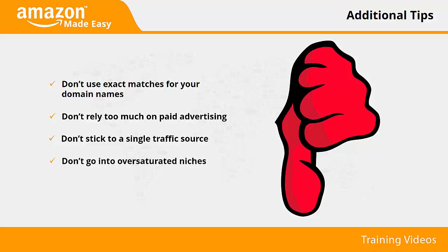Don't go into oversaturated niches. While one of the best strategies is selling and promoting best sellers and top-rated products in the Amazon marketplace, it is good to remember that some really popular products have saturated the market. This means you might be out of luck if you decide to only sell or promote smartphones, for example. Focus on niches that are unlikely to saturate the market.